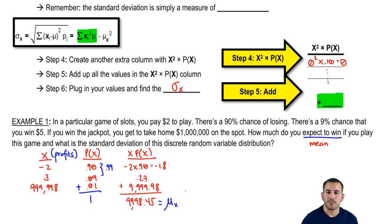We got the mean, now they're asking us to find what is the standard deviation of the discrete random variable distribution. Our next step is to create an X squared column P(X). The first one would be negative 2 squared, because we put the parentheses around the negative 2. We want to say negative 2 times negative 2 gives me a positive 4 times the probability associated with X. That's still 0.90. So, 4 times 0.90 is 3.6.